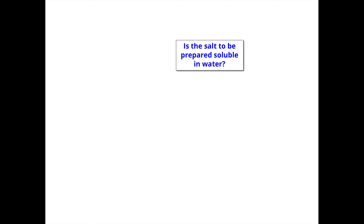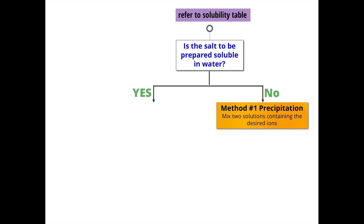You might ask how to know which method to choose given so many kinds of salts. We can simplify the decision into two questions. First, ask whether the salt we want to make is soluble or not — you can determine this from the solubility table. If the salt is insoluble, we use precipitation.